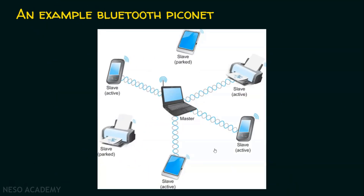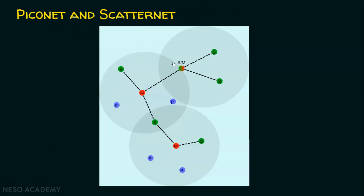Now let's see Piconet and Scatternet. A Piconet has one master and up to seven slave devices. A collection of multiple Piconets is called a Scatternet. An interesting point is that a single node can act as both a master and a slave — it can be a master node in one Piconet and a slave node in another Piconet.